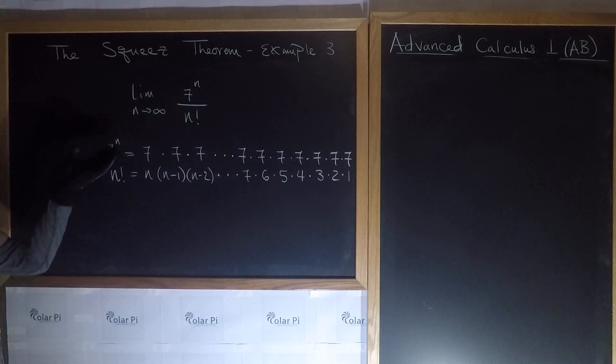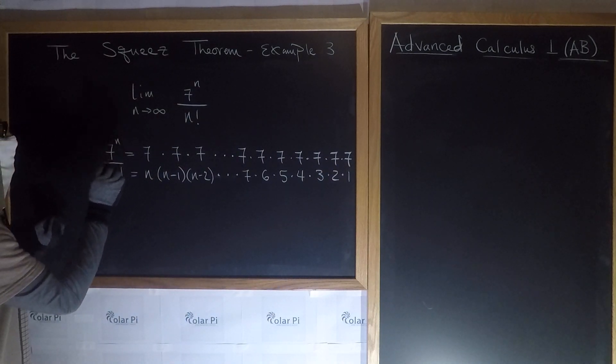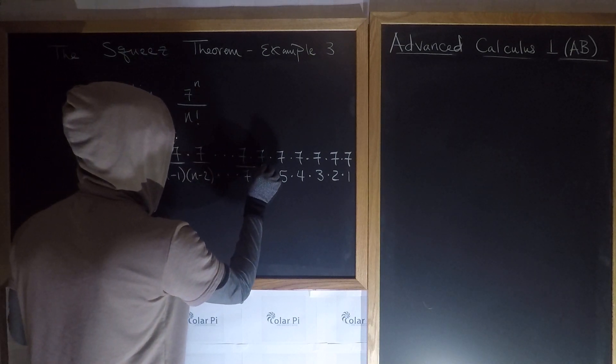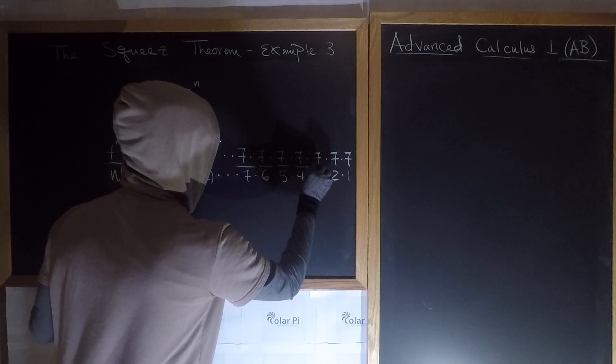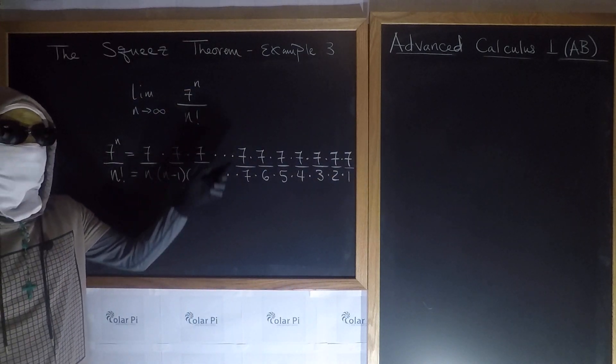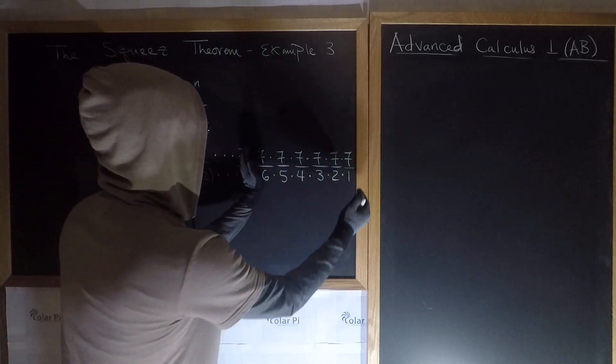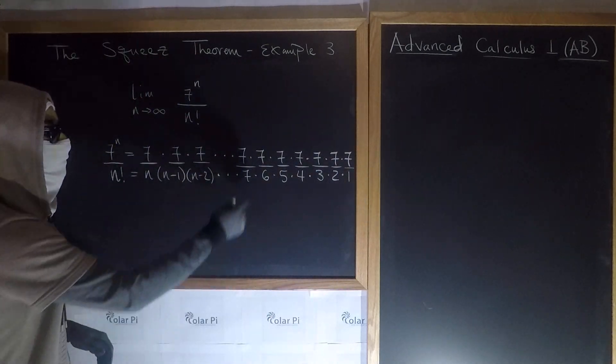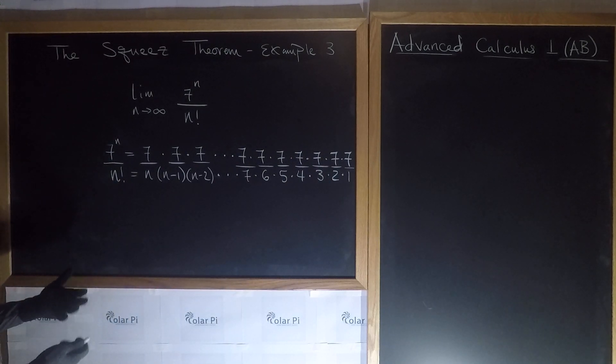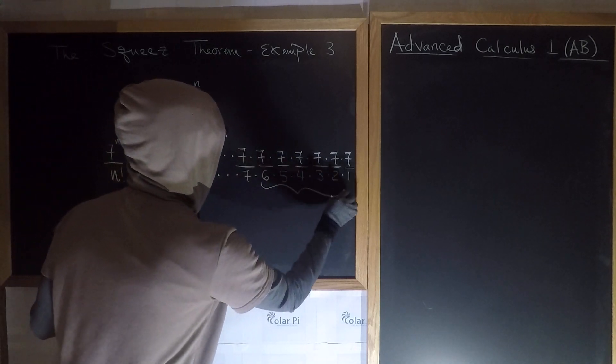Now since we have a quotient here, I need to put a division sign here, and as we've already said in previous examples, I could put individual division signs here. Now, notice, clearly 7 over 7 is 1, but all the fractions in here are more than 1. 7 over 6 all the way to 7 over 1. They're more than 1. So to make the analysis simple, let's keep these guys.